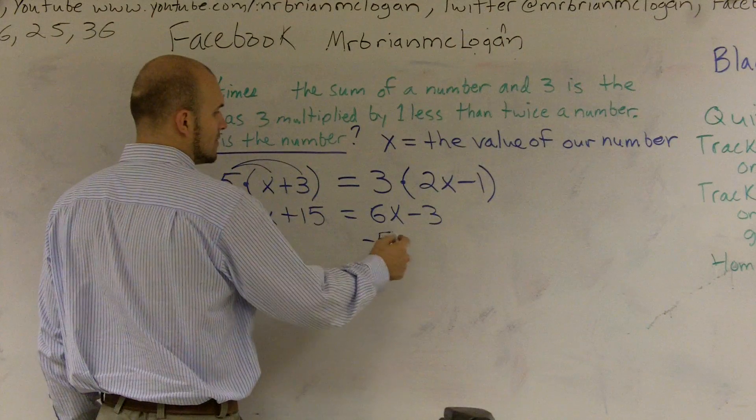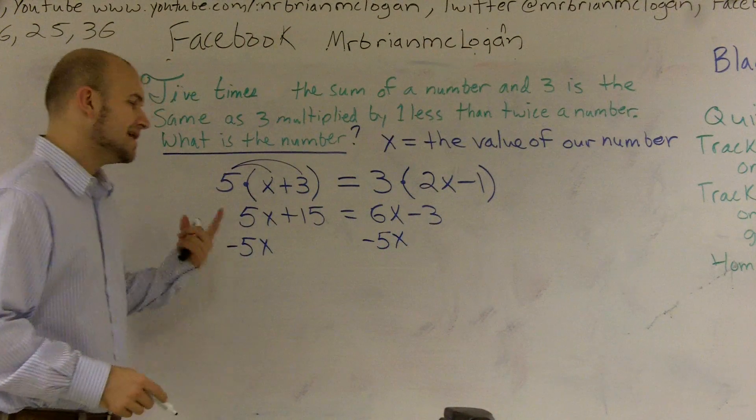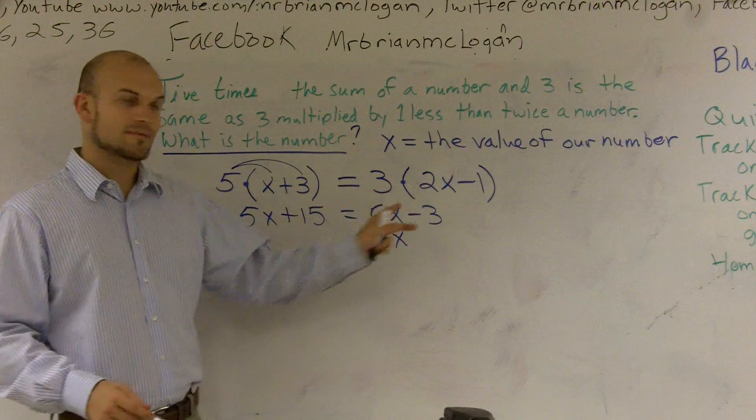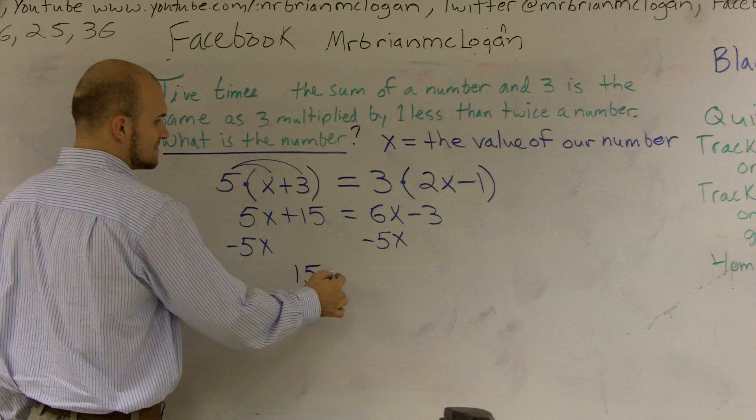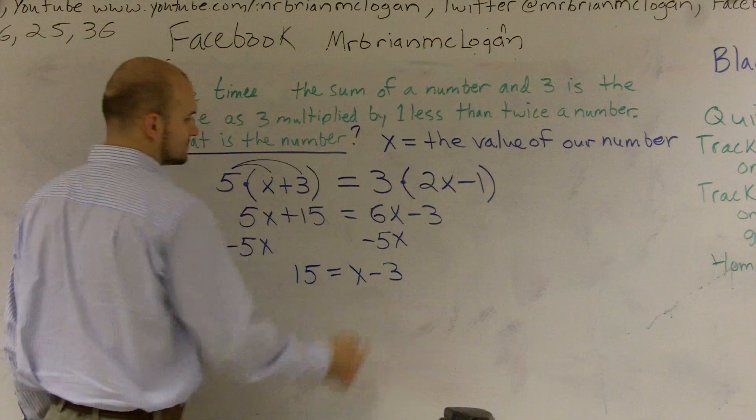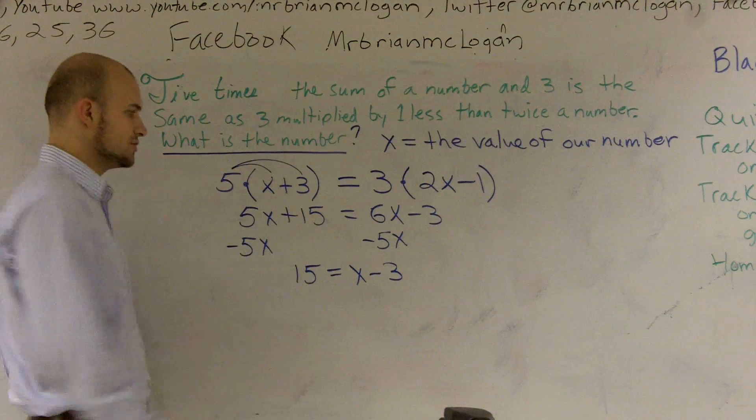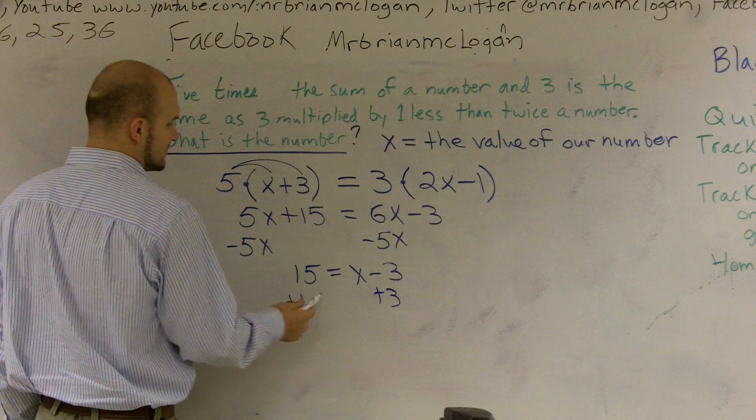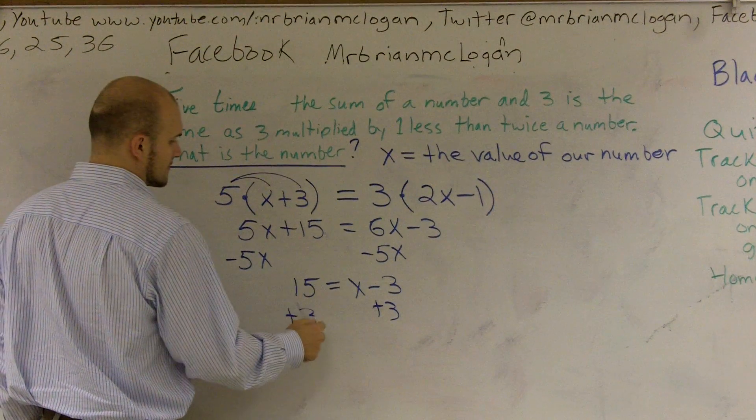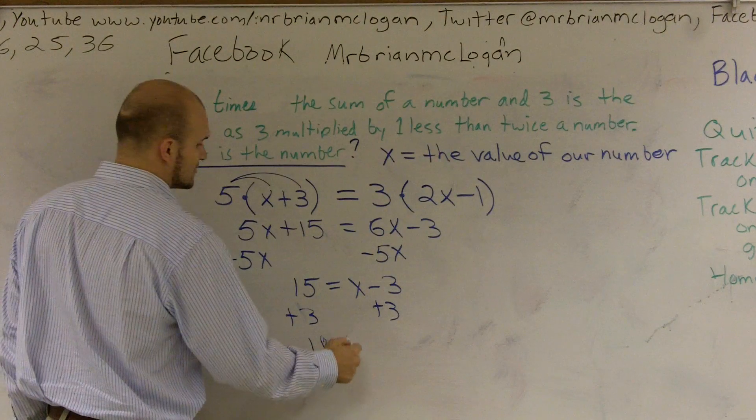And make sure you only subtract x's from x's. This cancels out to become zero. This becomes 15 equals x minus 3. Then I just undo my subtraction of 3 from my variable and add 3. Therefore, I get 18 is equal to x.